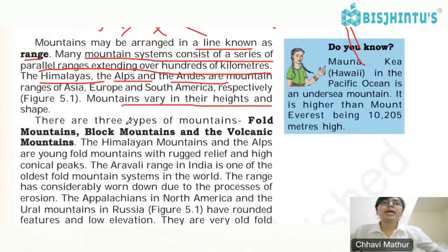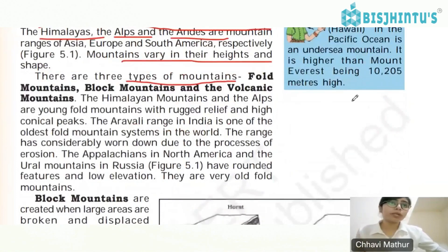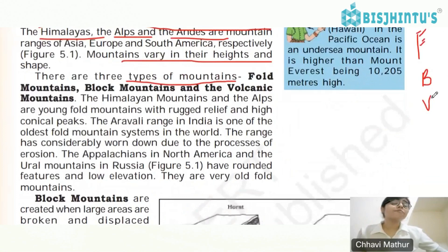Mountains vary in their height and shape. There are three types of mountains: fold mountains, block mountains, and volcanic mountains.